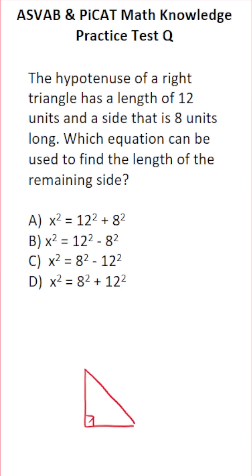The hypotenuse is always directly across from the right angle. According to the problem, the hypotenuse of this right triangle is 12. We're told one of its legs is 8, and we want to find its remaining side. I'm going to call its remaining side the unknown value x.